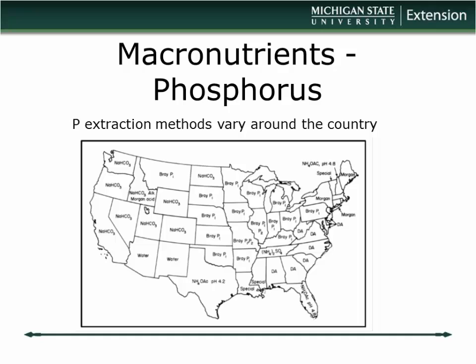When dealing with soil tests and phosphorus, different parts of the country use different extraction methods due to pH effects. Try to develop a relationship with a particular lab — especially one in your part of the country. Most of the Midwest uses what's called the Bray extraction. Understand what extraction method they're using because it can dramatically affect the reading you get, and the lab can provide fertilization recommendations along with results.